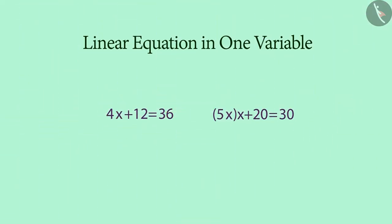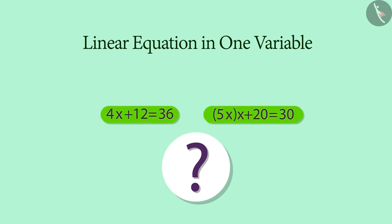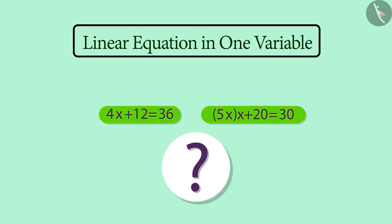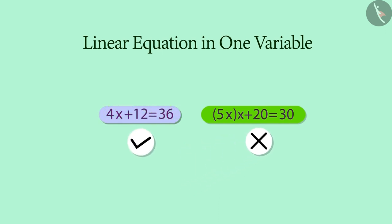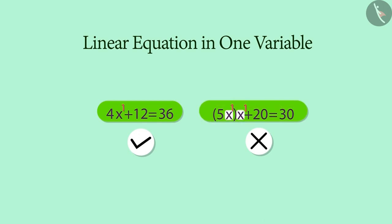Now look at both these equations. Do you think that these two are linear equations in one variable? No — only the first equation is a linear equation in one variable, because its highest power is one. But in the second equation, the variable appears twice and both times its power is one. Then why is the second equation not a linear equation? Let's find out.